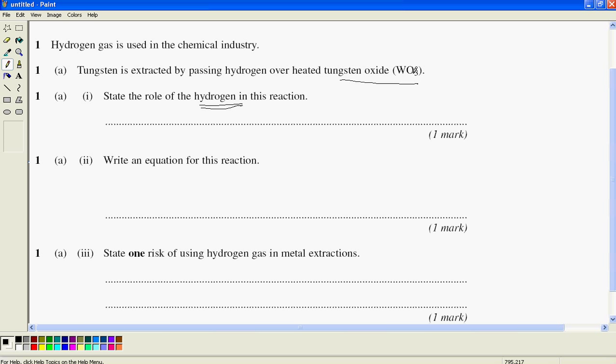If I'm looking at this, I think, hydrogen WO3, I need tungsten and that'd be W by itself. So I'm probably going to be getting rid of the oxygen. Well, I am. So hydrogen must be acting as a reducing agent.